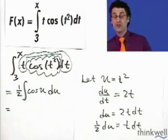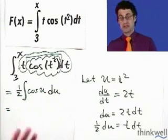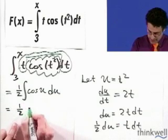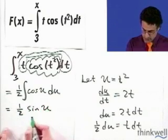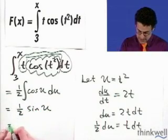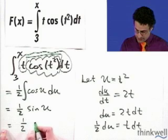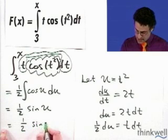What's the integral of cosine u? Well, that's going to be sine. So I have 1 half sine of u. But now put back what u is. So in this case, it's going to be 1 half of sine of t squared.